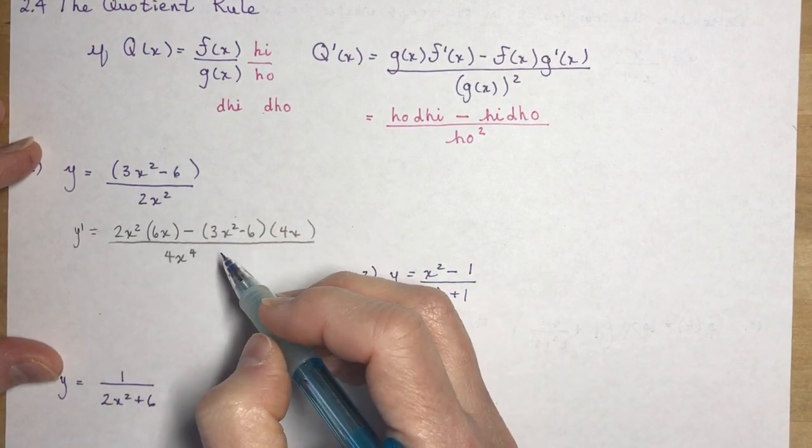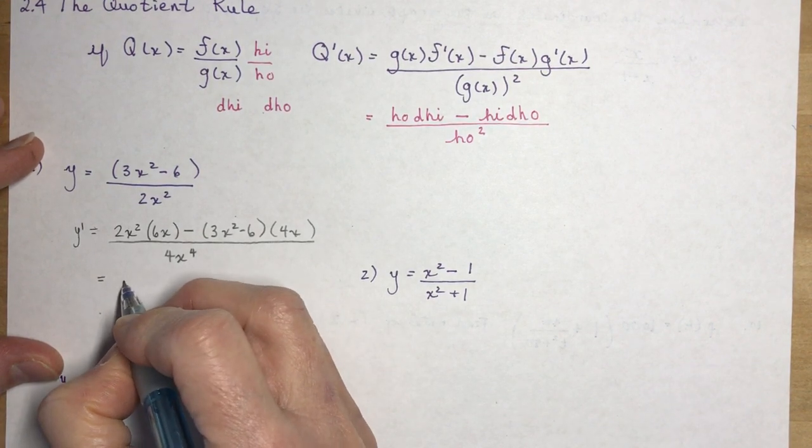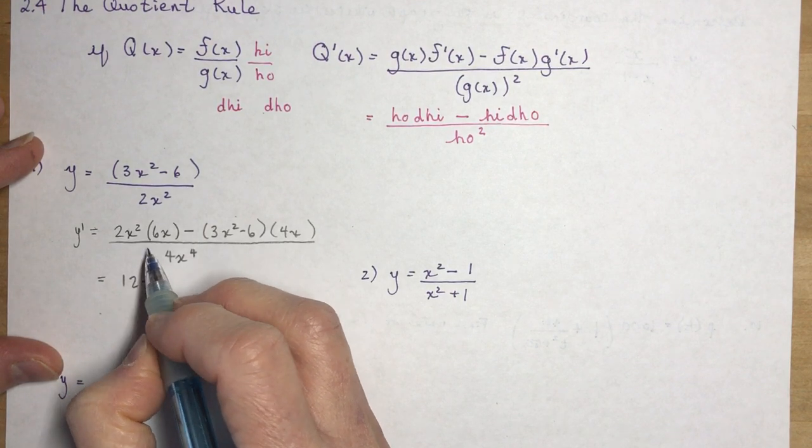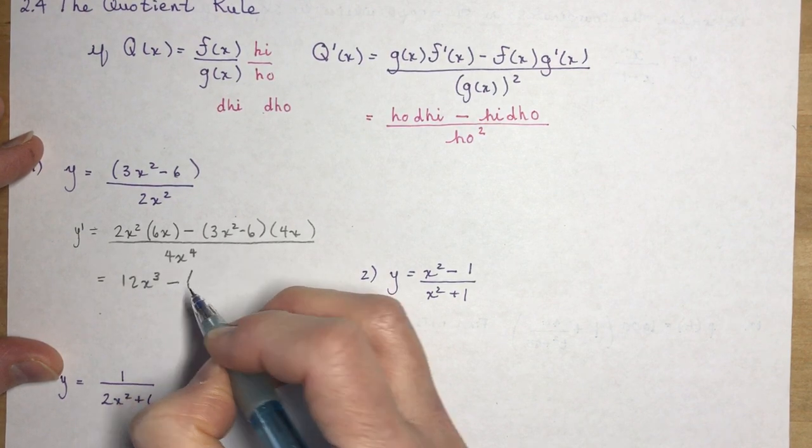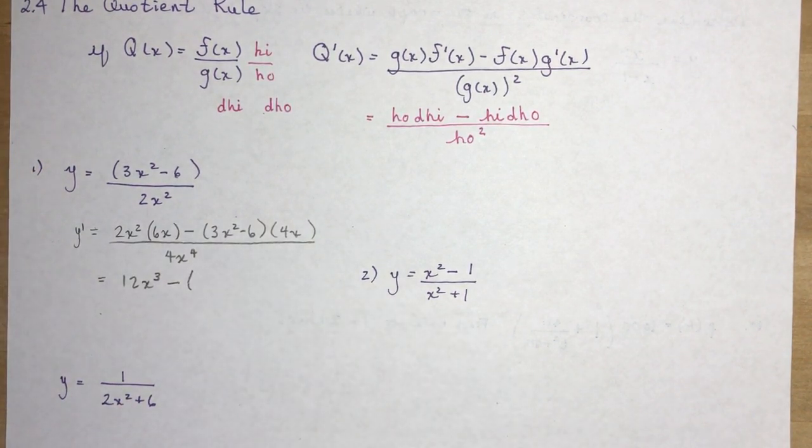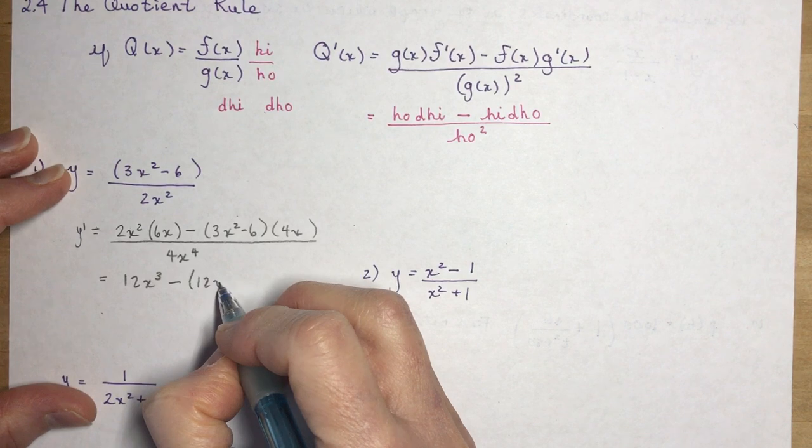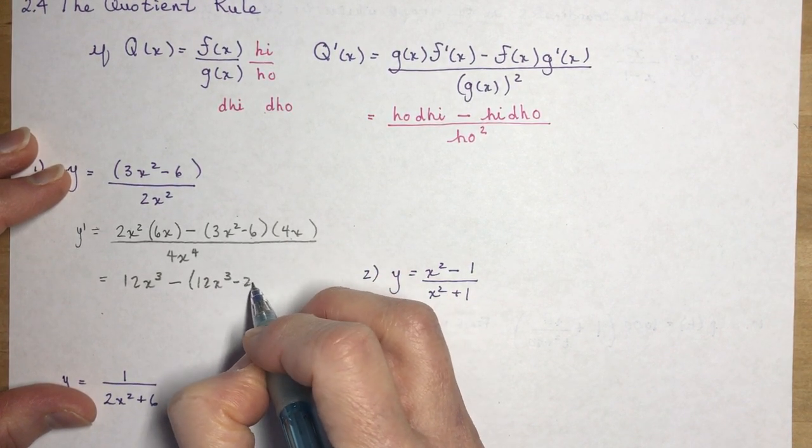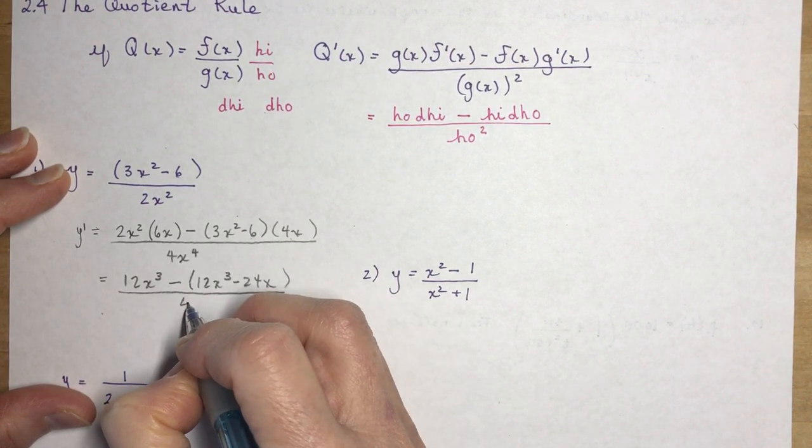Don't forget to multiply everything. 2x squared times 6x gives 12x cubed. Now I would do this because I'm very cautious with my negative signs, and so should you be. So I have 3x² times 4x, that's 12x cubed, and minus 6 times 4x is minus 24x over 4x to the fourth.